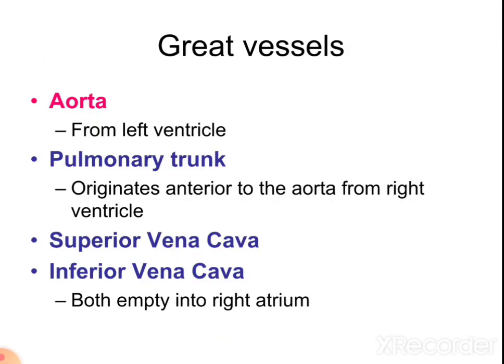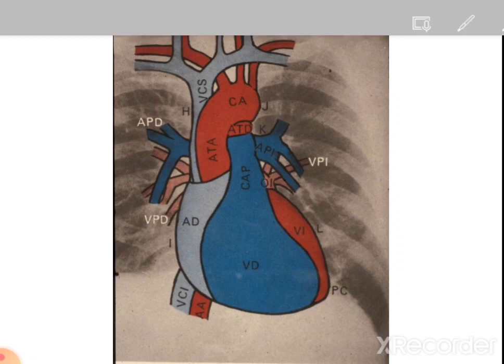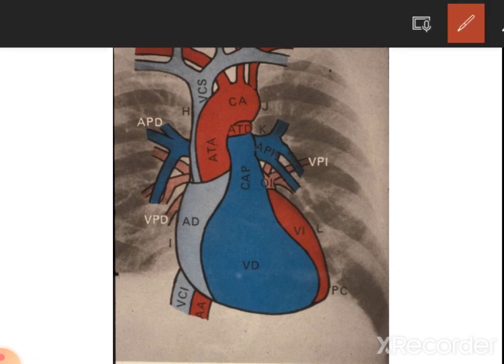The four great vessels of the heart are the aorta, pulmonary trunk, superior vena cava, and inferior vena cava, as shown in the diagram.